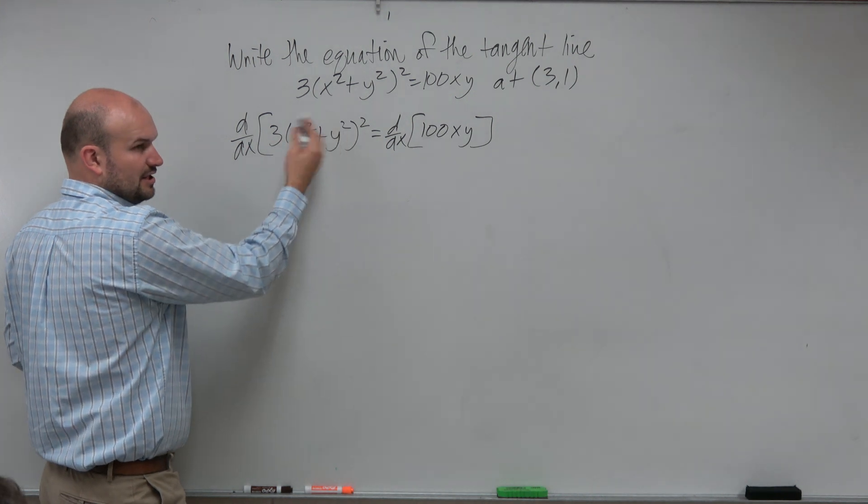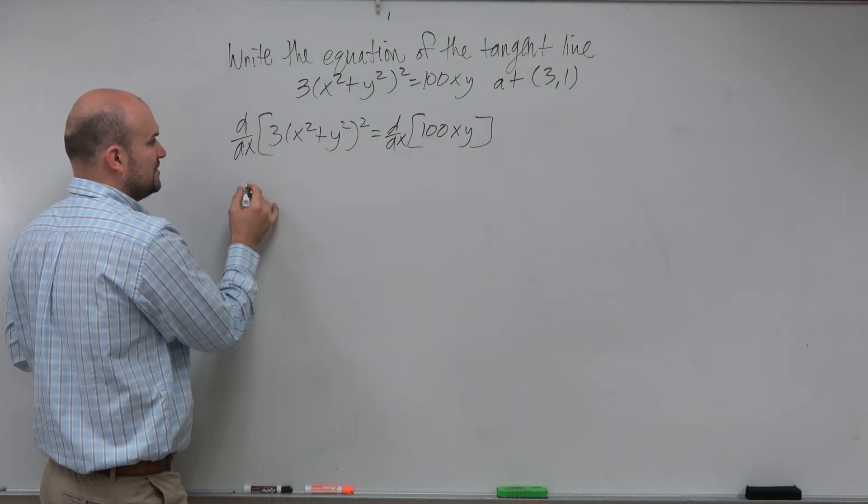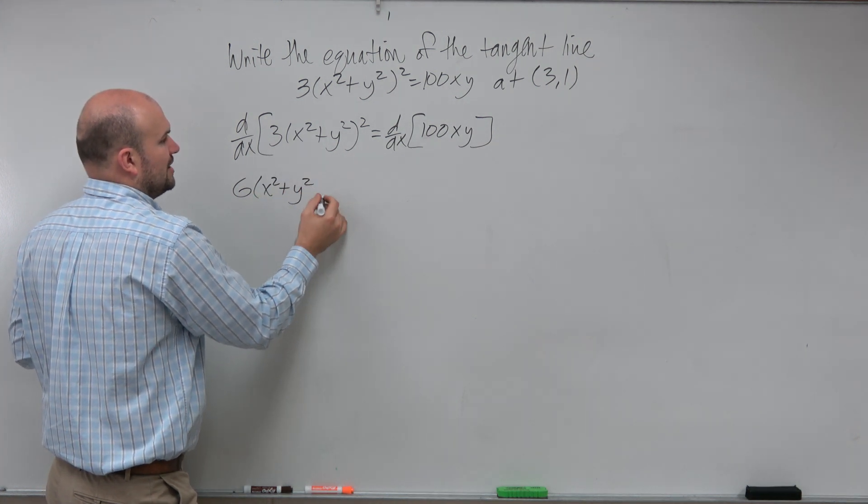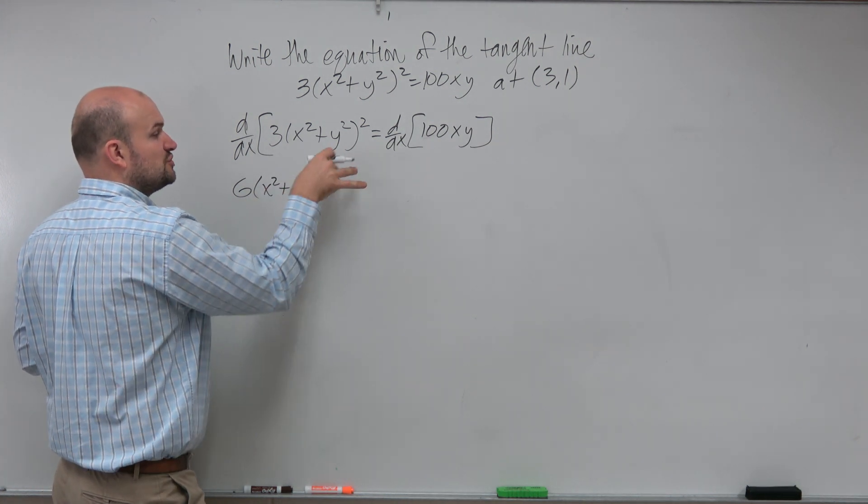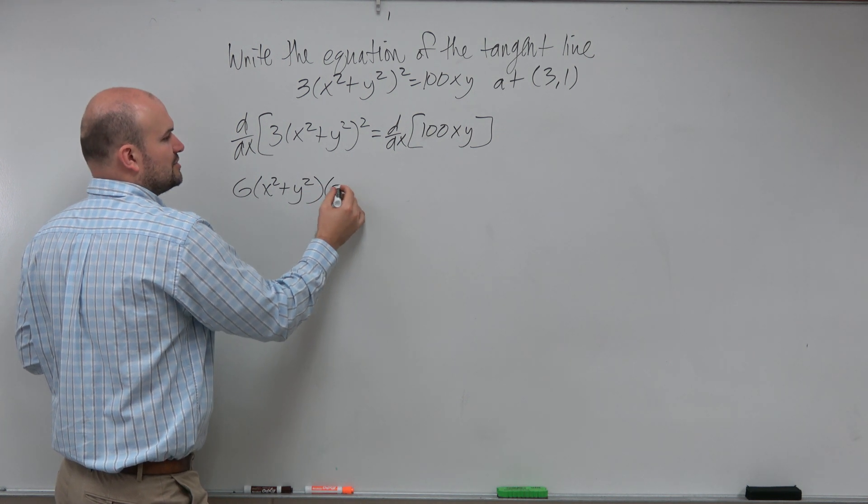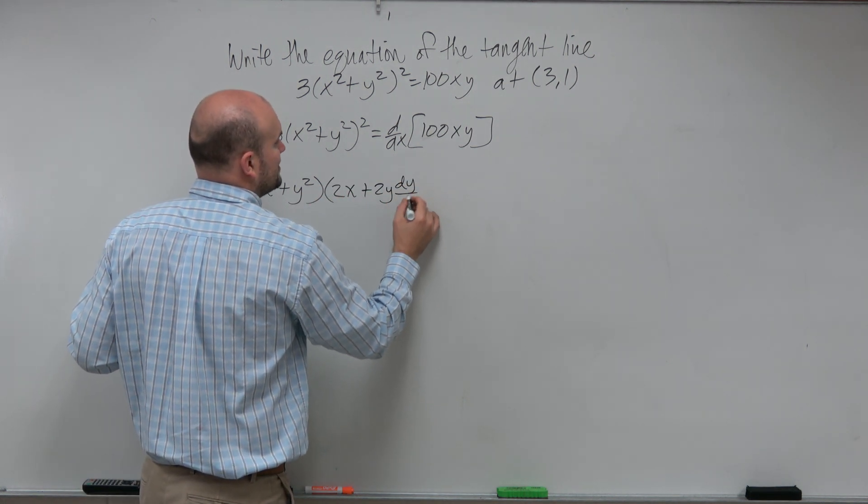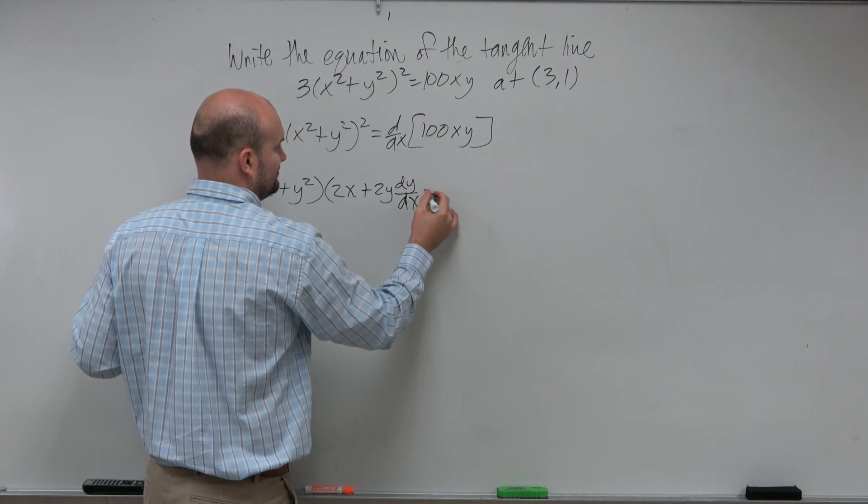Here we're just dealing with a chain rule, right? So when we take the derivative, I'm going to have 6(x²+y²) to the first, then times the derivative of the inside, which is going to be 2x plus 2y dy/dx.